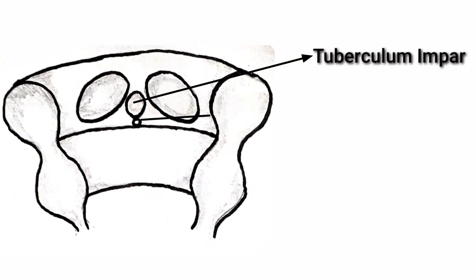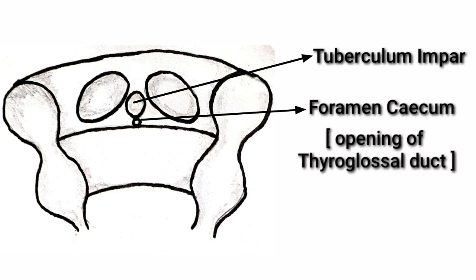In the floor of the primitive pharynx, over the first arch in the midline, there is a swelling called tuberculum impar. Just behind the tuberculum impar, the epithelium of the primitive pharynx forms a depression called the thyroglosal duct, where its opening is called the foramen cecum.